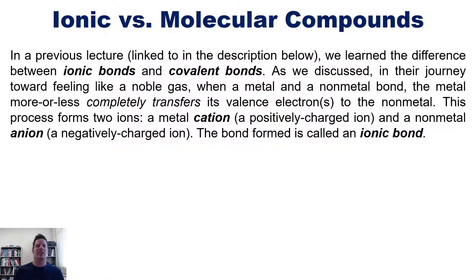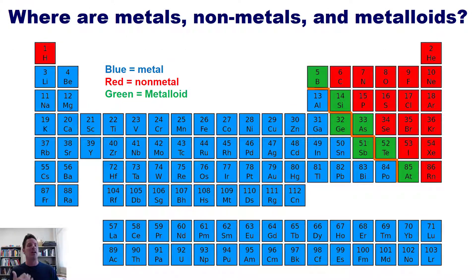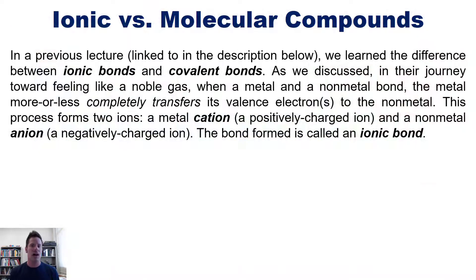So, in a previous lecture that I've linked to in the description below, we learned the difference between ionic bonds and covalent bonds. Now, as we discussed in that lecture, in their journey toward feeling like a noble gas, when a metal and a non-metal bond, the metal more or less completely transfers its valence electron or electrons to the non-metal. This process forms two ions: a metal cation, which is a positively charged ion, and a non-metal anion, which is a negatively charged ion. The bond that's formed here is called an ionic bond.